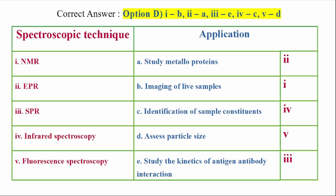The correct answer is Option D. NMR is matched to 1B - imaging of live samples. EPR is matched to 2A - study metalloproteins. SPR is matched to 3E - study the kinetics of antigen-antibody interaction. Infrared Spectroscopy is matched to 4C - identification of sample constituents. Fluorescent Spectroscopy is matched to 5D - assess particle size.